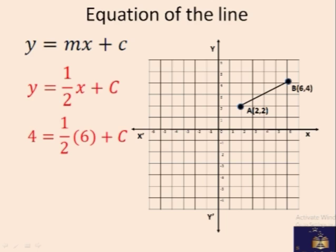So x was 6 and y was 4. If we simplify this, we'll get c equals 1. Now the equation becomes y equals half x plus 1. Now, this is the equation of this line.